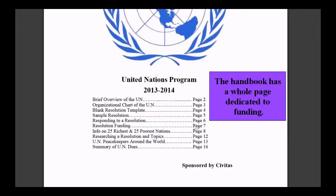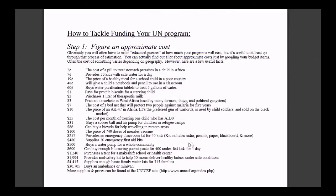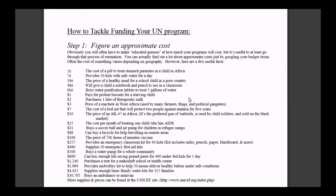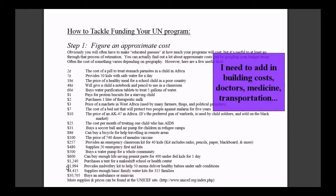Or you can look at the handy chart found in the Civitas Participant Handbook. The handbook has a whole page dedicated to funding — most of these numbers come from UNICEF. My resolution called for 60 health mobiles. Those alone would cost around $1.2 million. I need to add in building costs, doctors, medicine, and transportation.